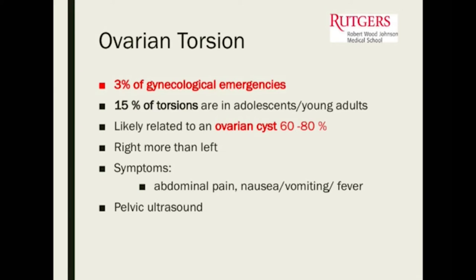Sometimes somebody comes in with pelvic pain and a large ovarian mass with features suggesting torsion — it could be the left or the right. Sometimes the mass is so big that we don't even know which side it's coming off of until we actually operate.